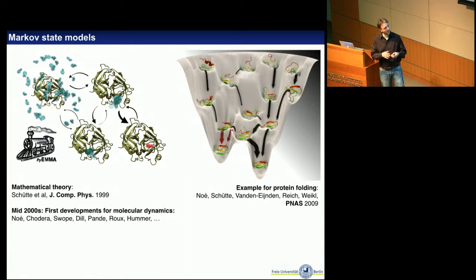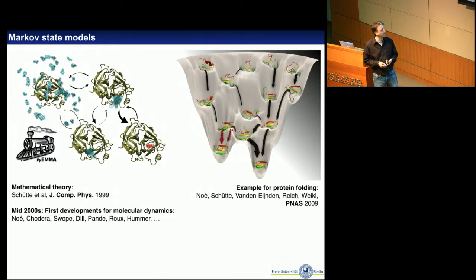The basic idea is we can sample rare events by sampling many not-so-rare events and putting them together, hoping that none of the individual barriers are too high. One of the main tools is Markov State Models — a very old concept, but in molecular dynamics this goes back to Christoph Schutter, who thought about this in the late 90s and wrote down mathematical ideas on how to address the molecular dynamics sampling problem with short trajectories and Markov State Models.